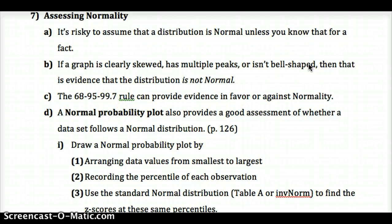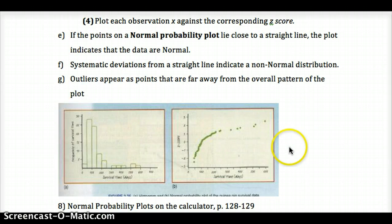Another way we can do that is look at a normal probability plot, which plots the z-scores. We arrange data from smallest to largest, figure out the percentile of each observation, and then we use the standard normal distribution, table A, or there's an INVNORM function on your calculator to find the z-scores at those percentiles. It'll plot a normal probability plot which looks like this. We plot each individual value of x against the z-score. If the points lie close to a straight line, the plot indicates that the data are normal.